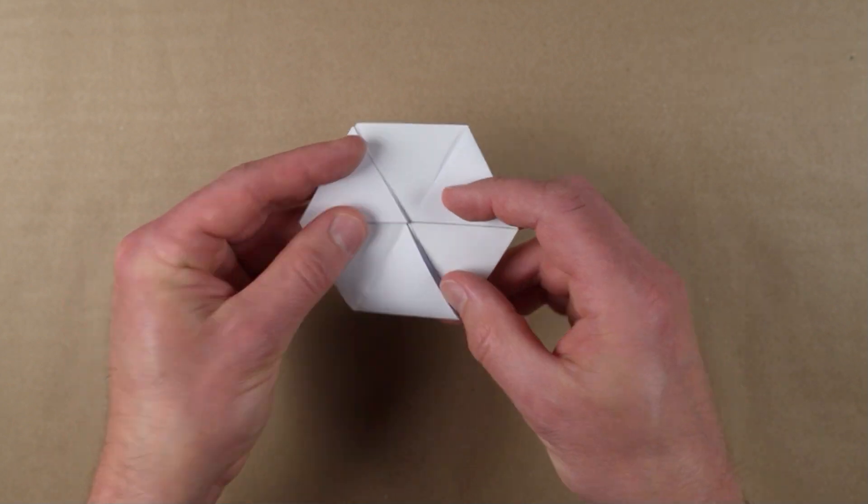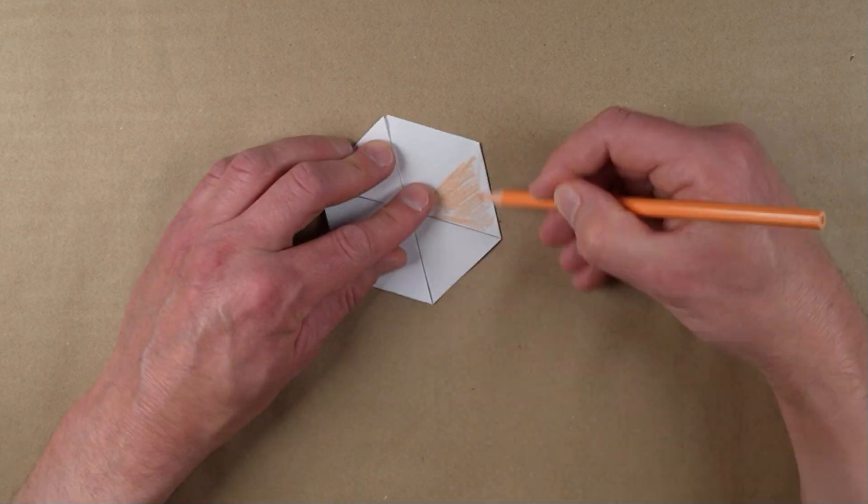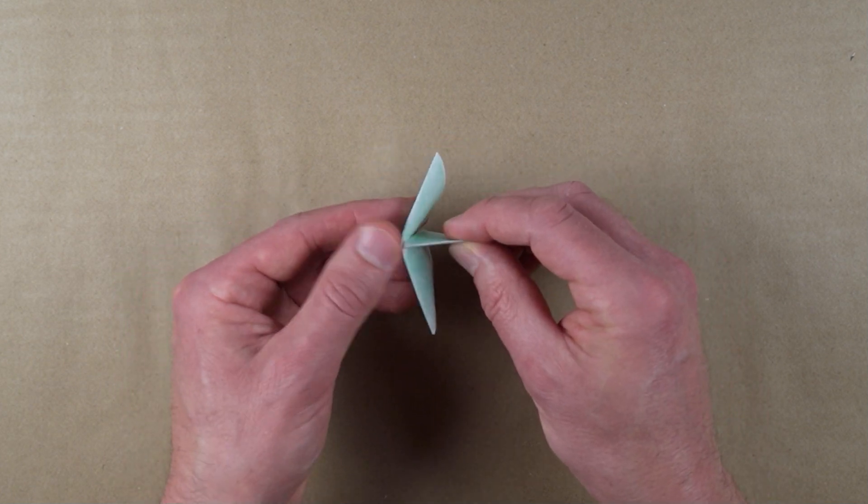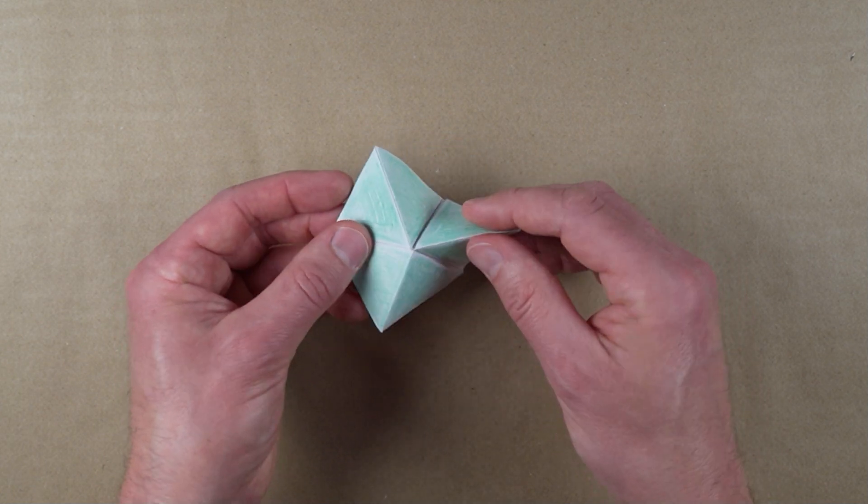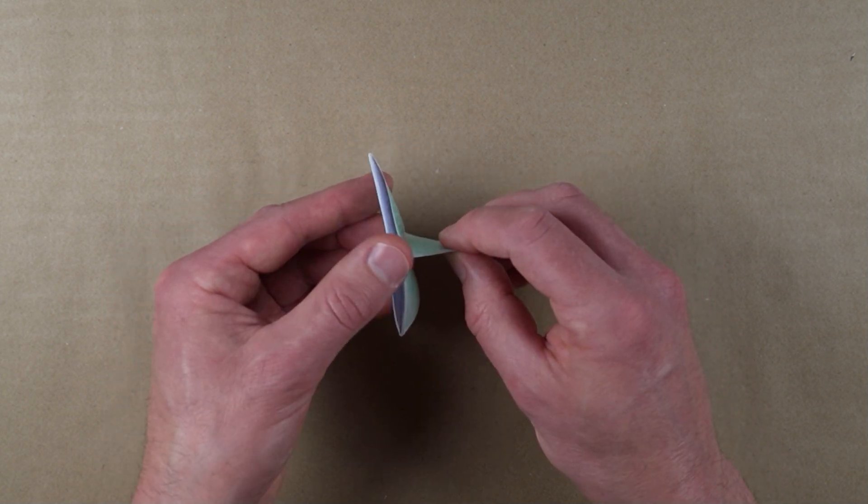You can now decorate the hexaflexagon's third face. When using your hexaflexagon, if you find that there's no opening to part on top for the last step of the flex algorithm, try rotating the flexagon and starting the algorithm by pinching an adjacent pair of triangles.